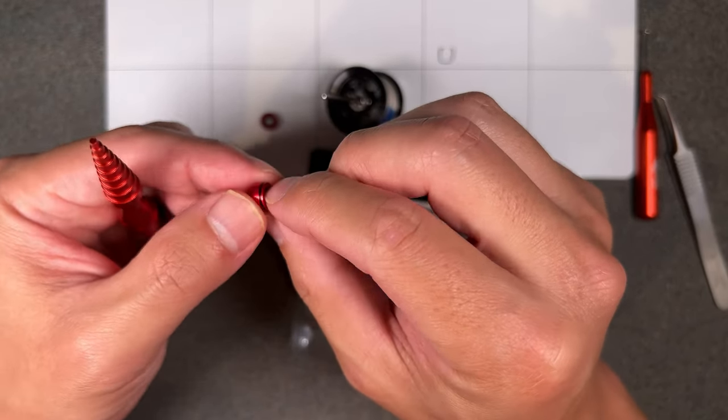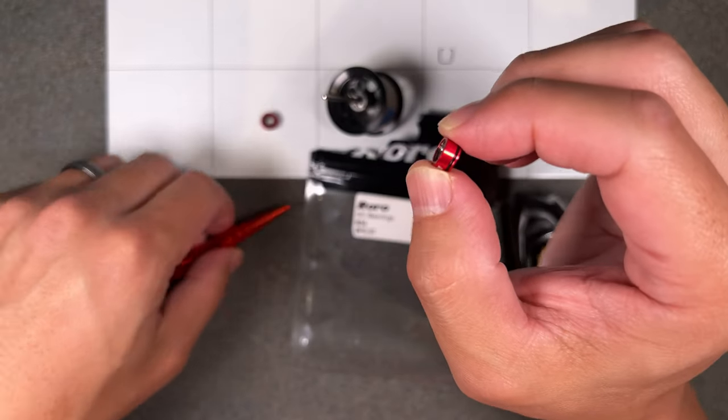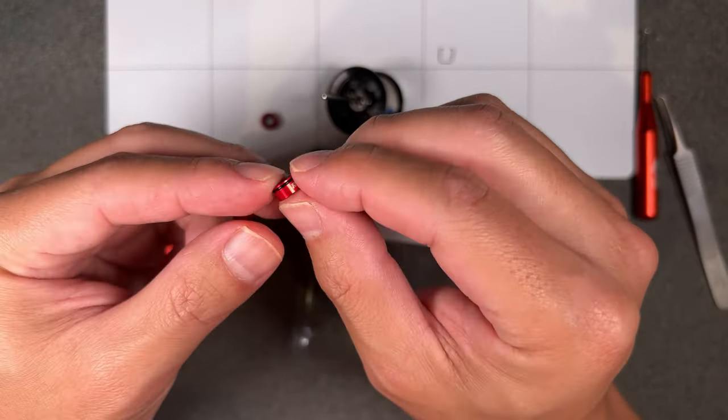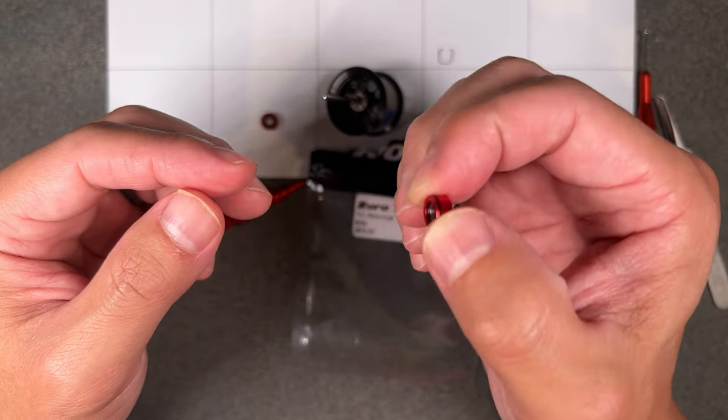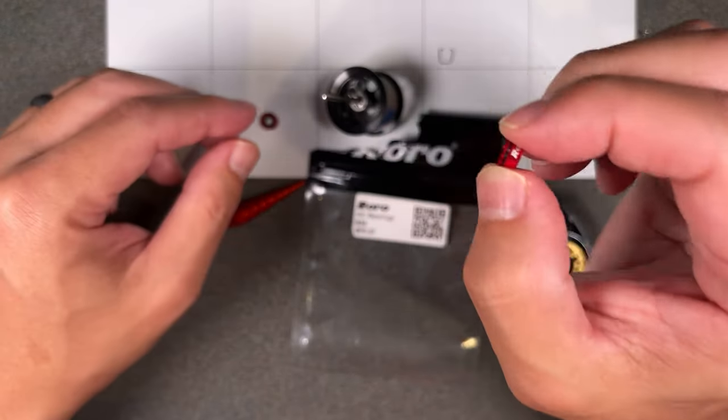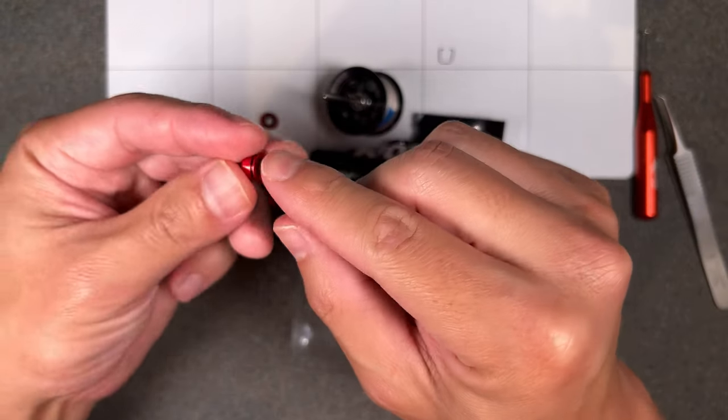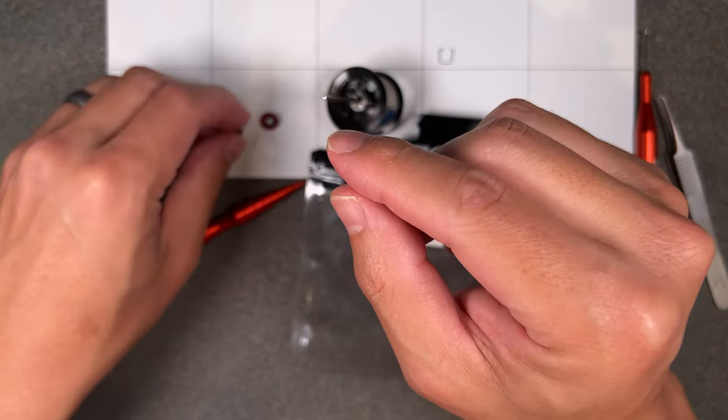Because if you put this in brake parts cleaner, or if you put this in isopropyl, that will dry out that rubber. And so you're not going to get O-rings that last as long.